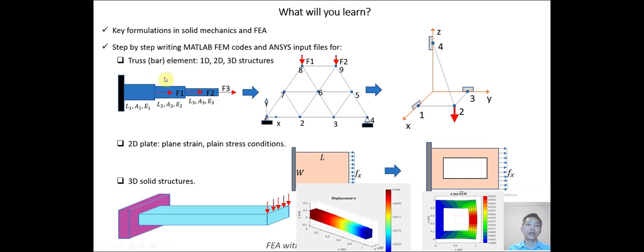Firstly, you will learn key formulations in solid mechanics and finite element analysis. Why I said key formulations? Because you already know that learning theory is very boring. So in the course, I will not explain every detail in terms of physics. I just give you a summary about key formulations that we will use during the course and must remember. Because in this course, we not only use ANSYS program, but we also code in MATLAB. So we need to know the formulations.